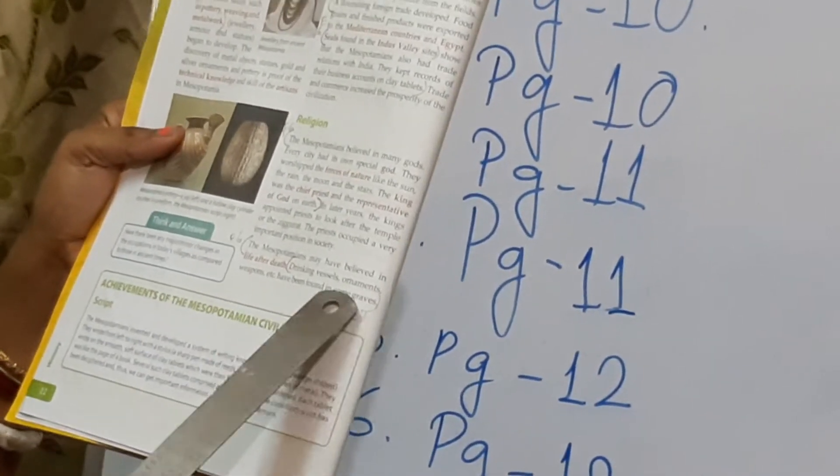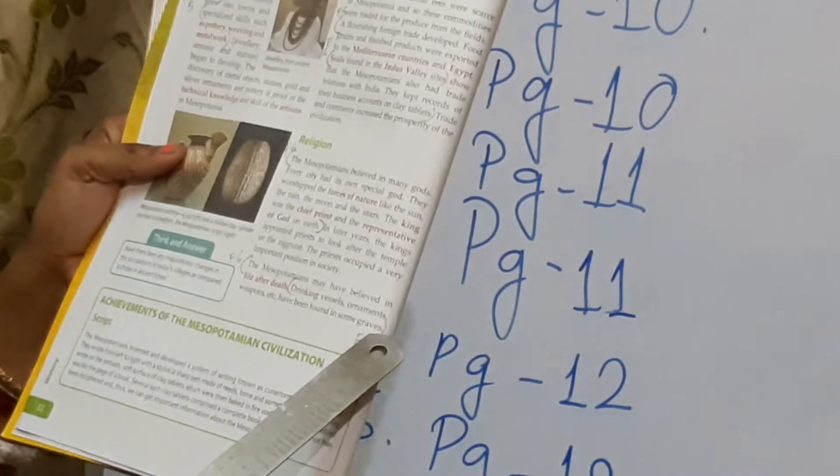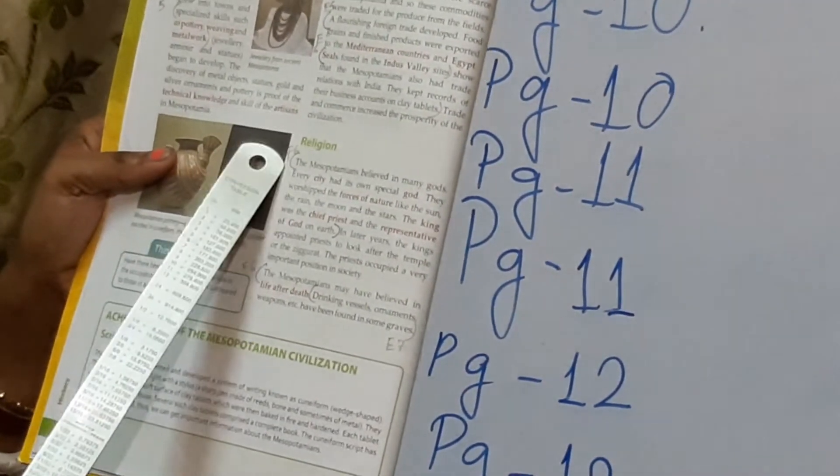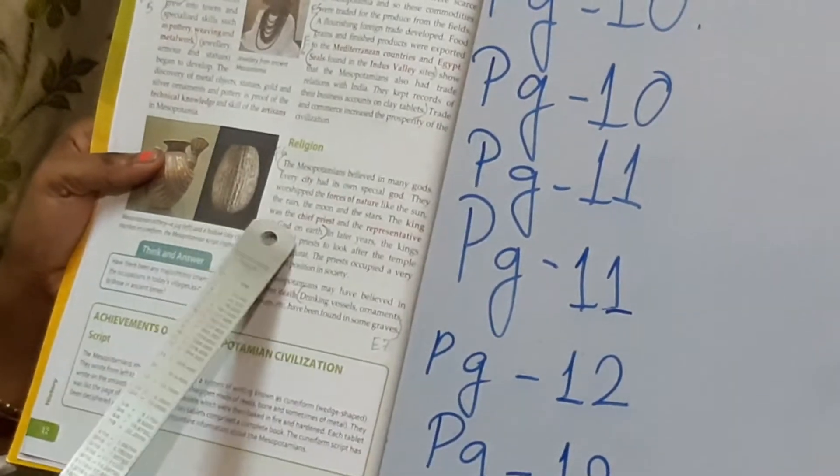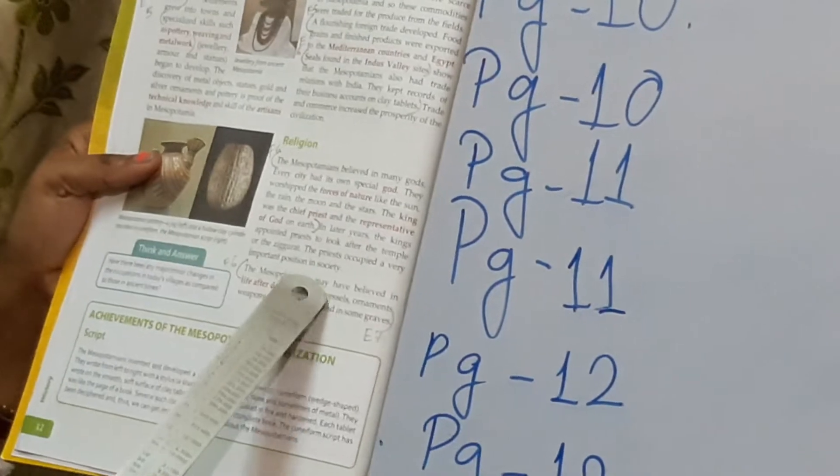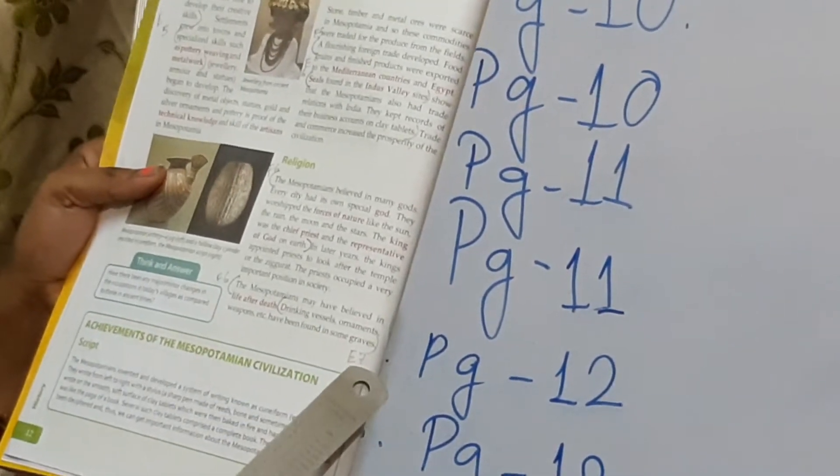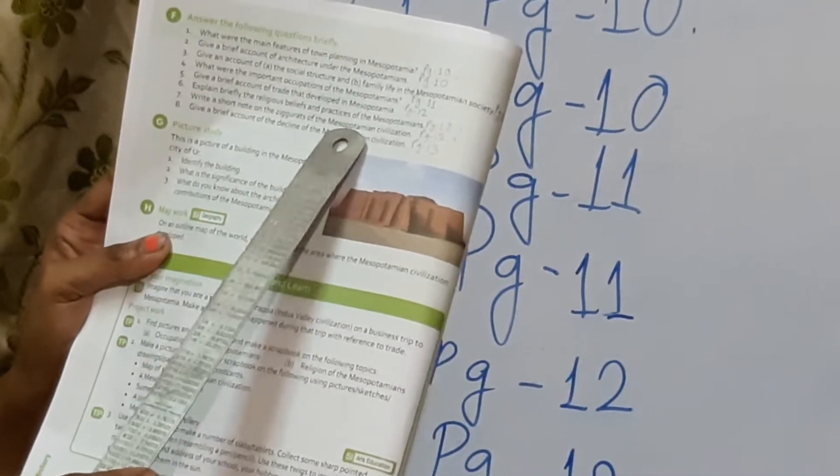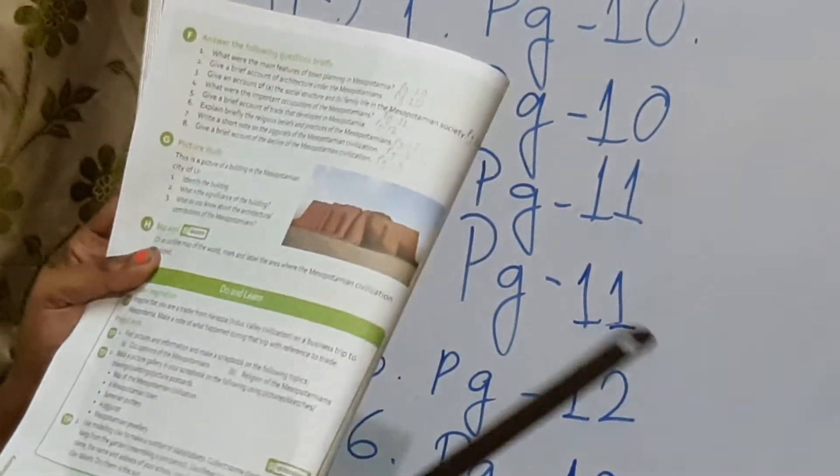Then again you will start from the second paragraph. That is the Mesopotamians may have believed in life after death. Drinking vessels, ornaments, weapons etc. have been found in some graves. Up to this. So again I am repeating, this F6 answer, starting from the Mesopotamians till the God on earth. And in second paragraph, the Mesopotamians till some graves. You will write this answer. Now question number 7 you see. Write a short note on the ziggurats of the Mesopotamian civilization.